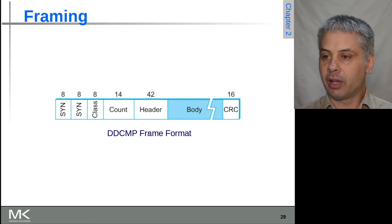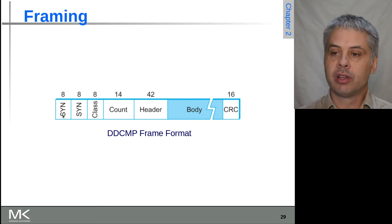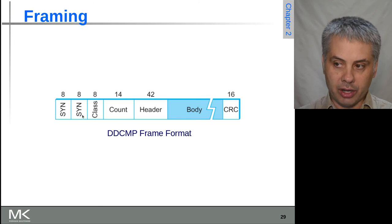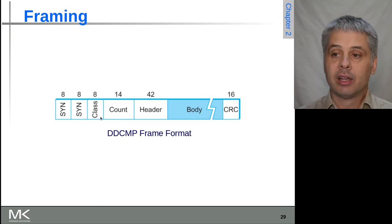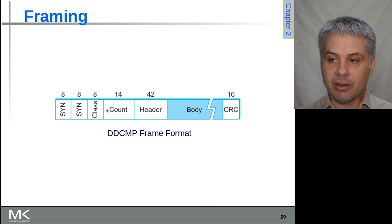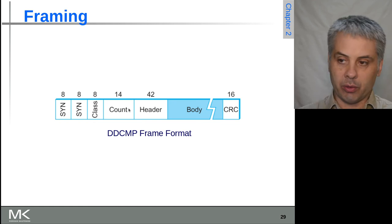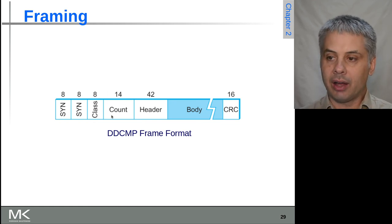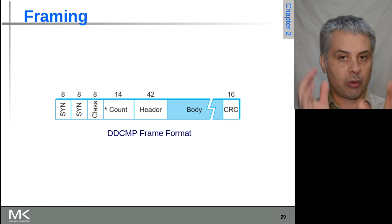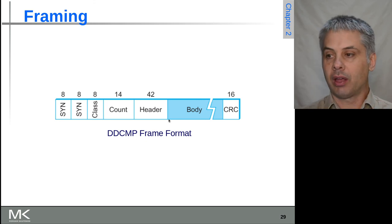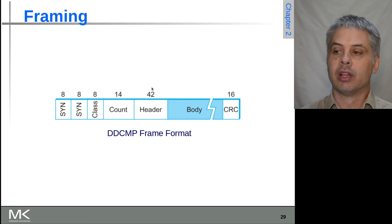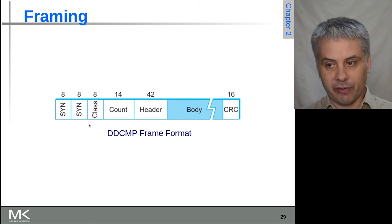So DDCMP, if we have a look at how that was structured: you still had the synchronization markers because they were still needed. Then we had the class and the count, and then they had their header. And whilst the length of these fields can vary a little bit, the key is that the count can be shorter than all of those stop and start markers that are otherwise needed, and so you can get slightly better efficiency.